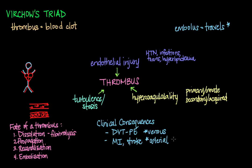One dreaded complication is disseminated intravascular coagulation, or DIC. In DIC, there is widespread fibrin thrombi in the microcirculation, which can cause diffuse circulatory insufficiency in several organs. Because of all the consumption of clotting factors, this actually leads to a concurrent widespread bleeding throughout the body.